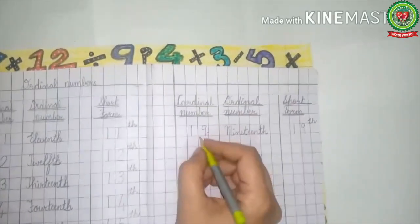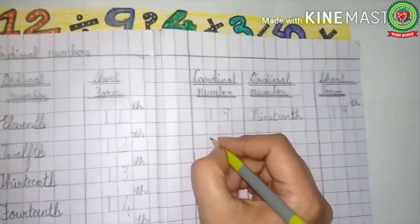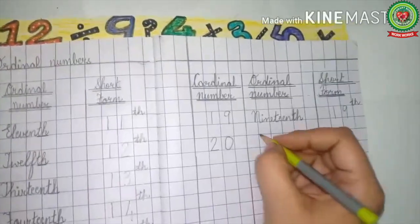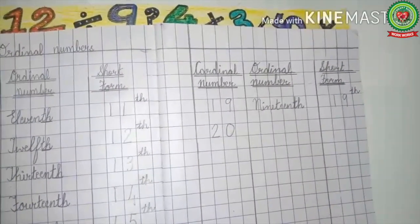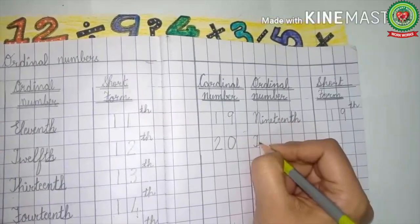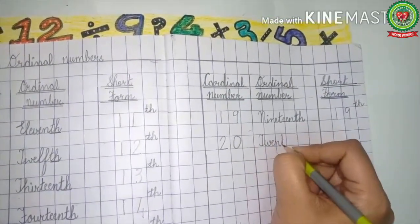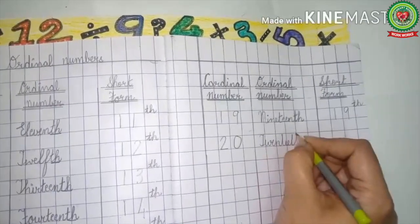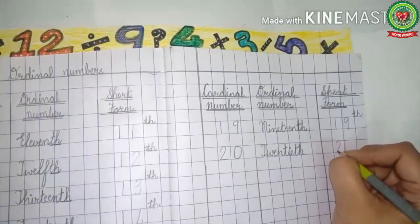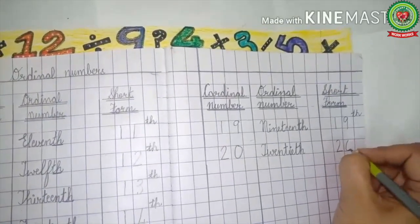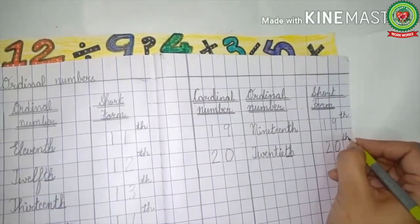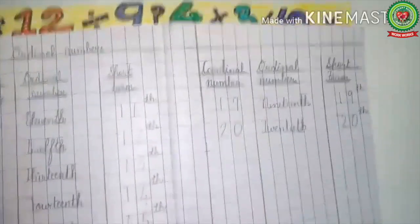After 19 comes 20, and the ordinal number of 20 is 20th. We write the spellings: T-W-E-N-T-I-E-T-H — 20th. The short form is 20 and add the last two letters TH, and it becomes 20th.